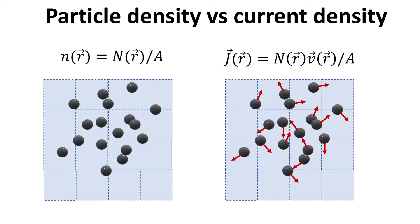Since velocity is a vector, the current density is also a vector. For example, you can have many particles in a location, but if these particles have a zero average velocities, the current density at that location will be zero.